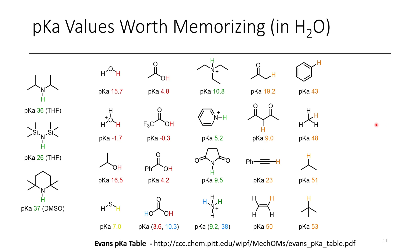Here I've included a big list of pKa's worth knowing. Three common strong bases usually in their lithium base form are shown here, but these are their conjugate acids. The pKa of diisopropylamine (the conjugate acid of LDA) is 36 in THF. The pKa of hexamethyldisilazane is 26 in THF. The pKa of tetramethylpiperidine is 37 in DMSO. For the rest of these compounds I've included pKa's in water, as these tend to be more useful. However, most experimentally determined pKa's are in DMSO, so in the next slides we'll see more examples in DMSO.